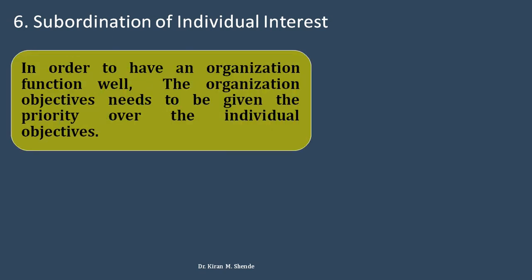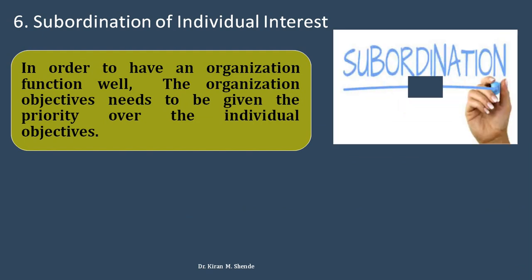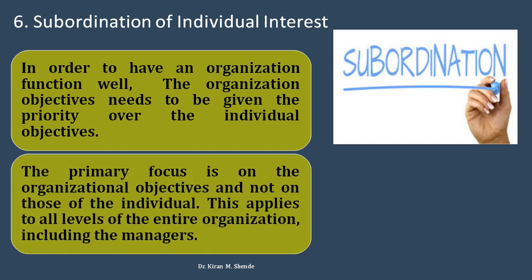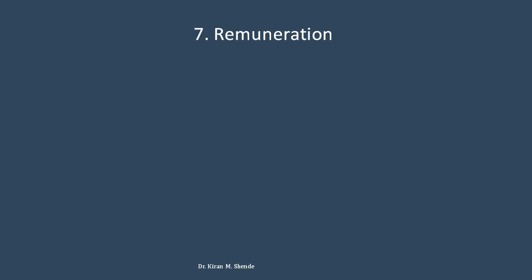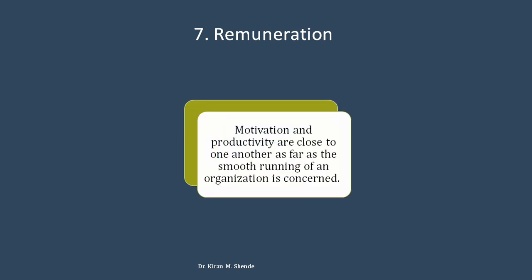Subordination of individual interest means that organizational objectives must be given priority over individual objectives. You should always think about the organization first. The primary focus is on organizational objectives, not on those of individuals. This applies to all levels — top management, middle management, and lower-level management — everybody should think about the organization before personal interest.